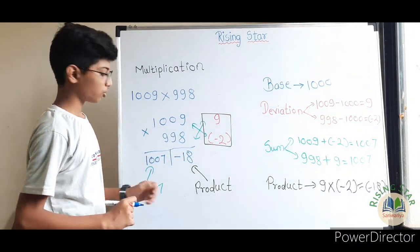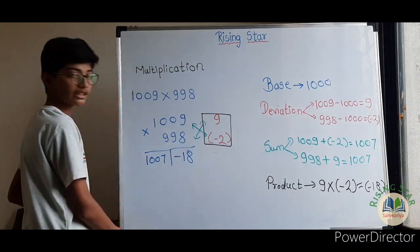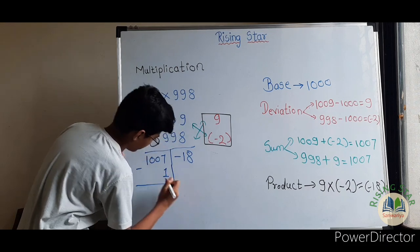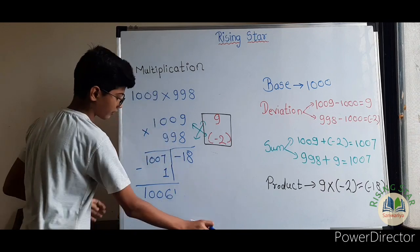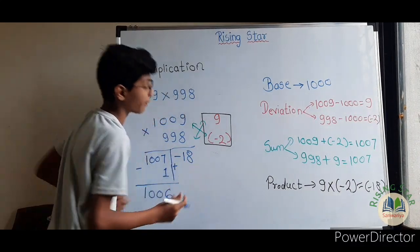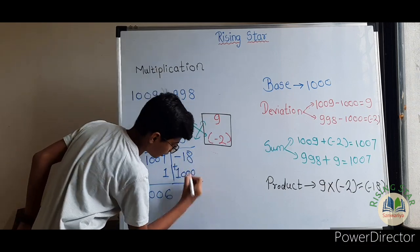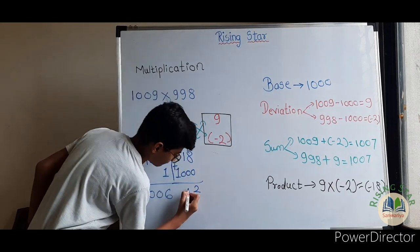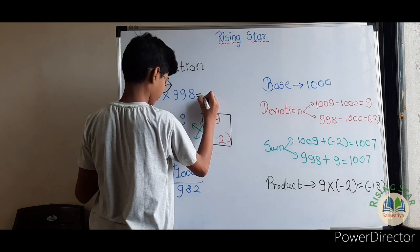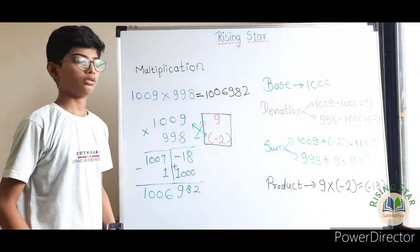But this can't be the final number, so you have to follow one more step. Subtract 1 from the sum side: 1007 minus 1 gives 1006. Then add the base 1000 to the product: minus 18 plus 1000 gives 982. So 1009 into 998 equals 1,006,982.